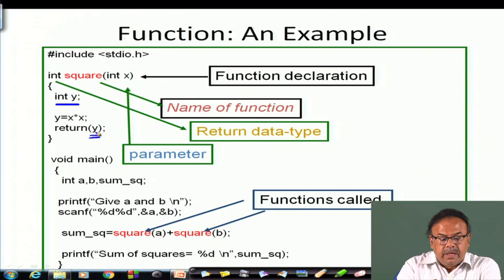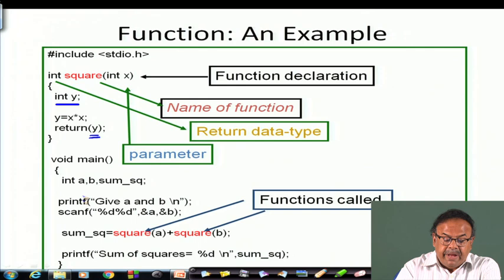After the return, y vanishes. Where is y returning to? Wherever square has been called. Here you see there is a sum_of_square. What is main doing? Main has variables a, b, and sum_of_square. A printf asks for a and b, and we read a and b.